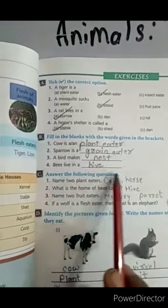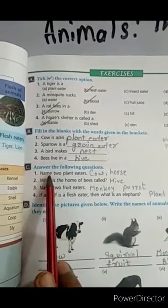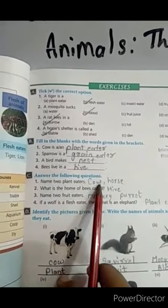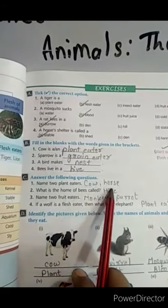Answer the following questions. Name two plant eaters. Two plant eaters are cow and horse.